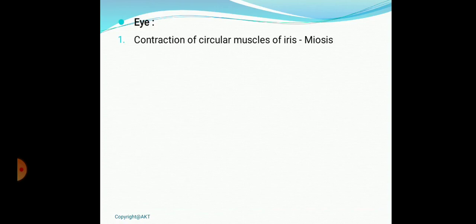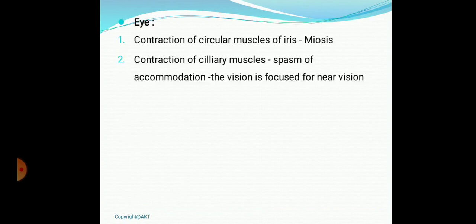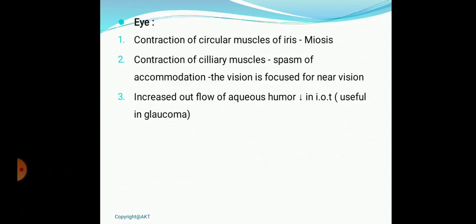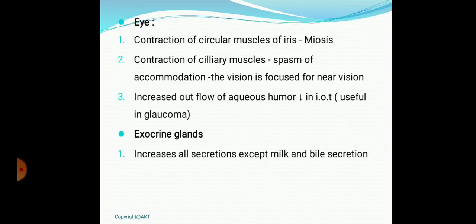On the eye: contraction of the circular muscles of the iris leads to miosis, reducing pupil size. It also contracts the ciliary muscles, resulting in spasm of accommodation — difficulty accommodating far vision. Near vision will be clear but far vision will be blurred. Overall, administration of acetylcholine causes blurring of vision due to miosis and spasm of accommodation. It also increases the outflow of aqueous humor from the posterior to anterior chamber, decreasing intraocular pressure, especially in glaucoma patients.